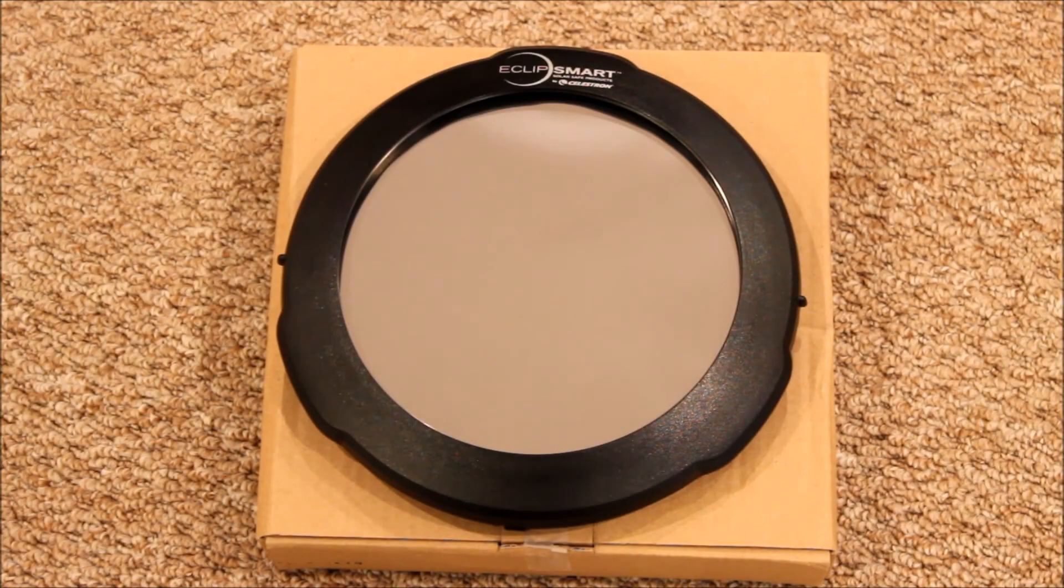One thing I really do like about the EclipseSmart solar filters is they're relatively affordable. This 8-inch solar filter for the Schmidt-Cassegrain was only about $50 a year ago, and it's about that same price still. So hopefully in the future they stay about that same rate, but most solar filters in this size run about $70 to $100 or so. So $50 is actually a really good price.